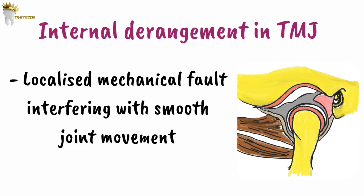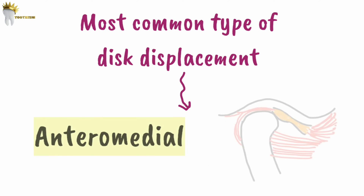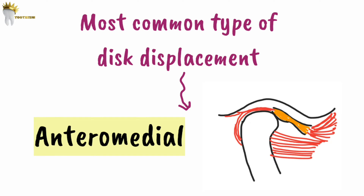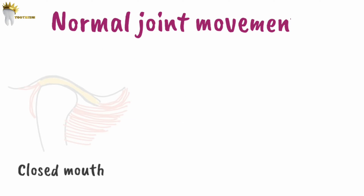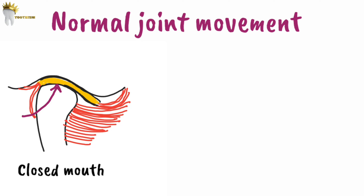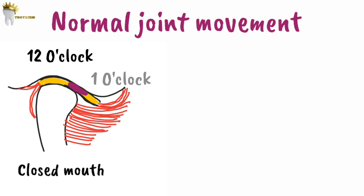The thing causing this interference is most often the malpositioned articular disc. The disc can be displaced in any direction, but the most common is anteromedial displacement. Before we go ahead, let's look at the normal position of the disc. In a normal TMJ, the posterior band is in the 12 o'clock position — meaning it is sitting above the condylar head — and the intermediate zone, the middle part of the disc, is situated in the 1 o'clock position.